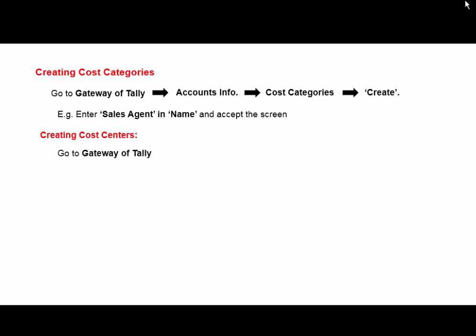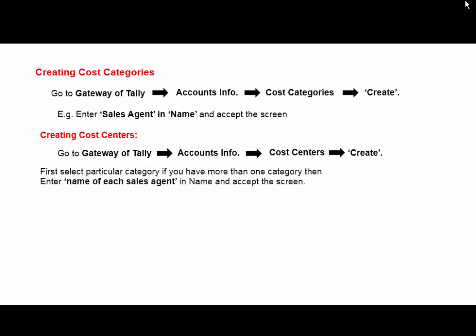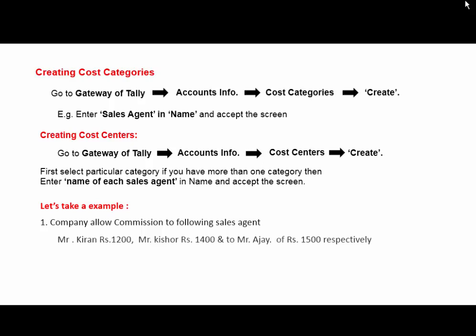For cost center creation, go to Gateway of Tally, Accounts Info, Cost Centers, and Create. Here, first select a particular category. If you have more than one category, then enter the name of each sales agent, commission agent, or employee to whom you pay salary, one by one. For example, the company allows commission to sales agents Kiran, Kishore, and Ajay — 1200, 1400, and 1500 respectively. Here the sales agent is the category and the agent names are under the cost center. Since we paid commission, 'Commission Allowed' is the ledger.